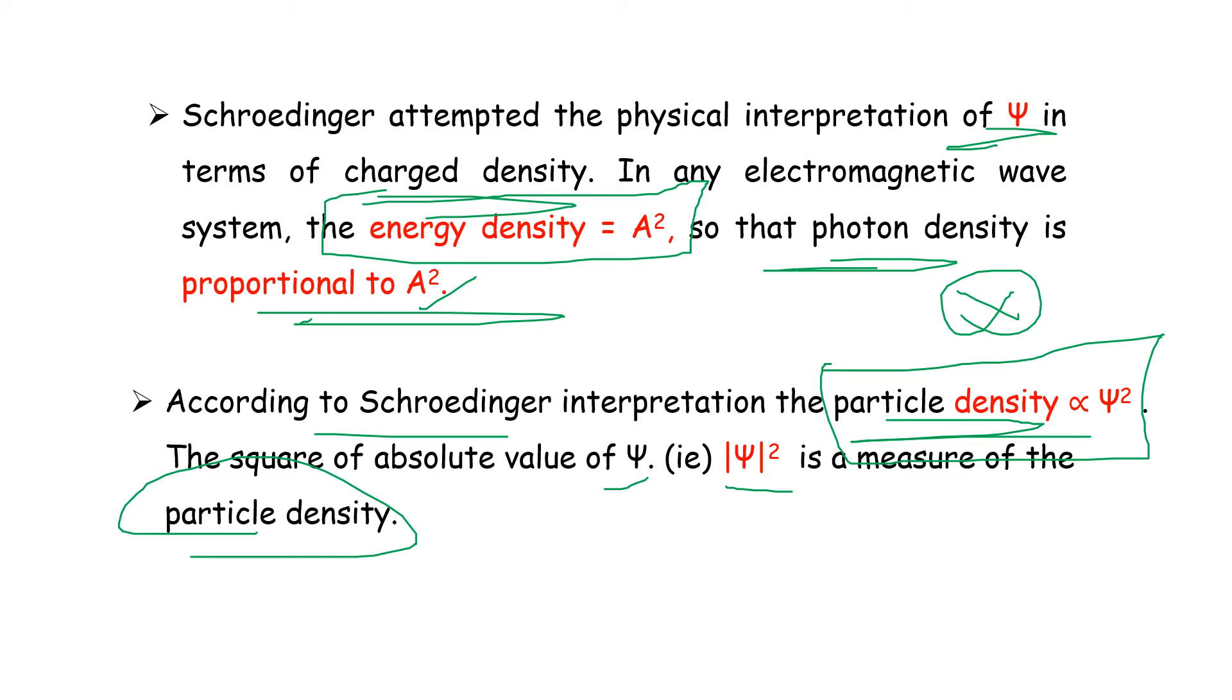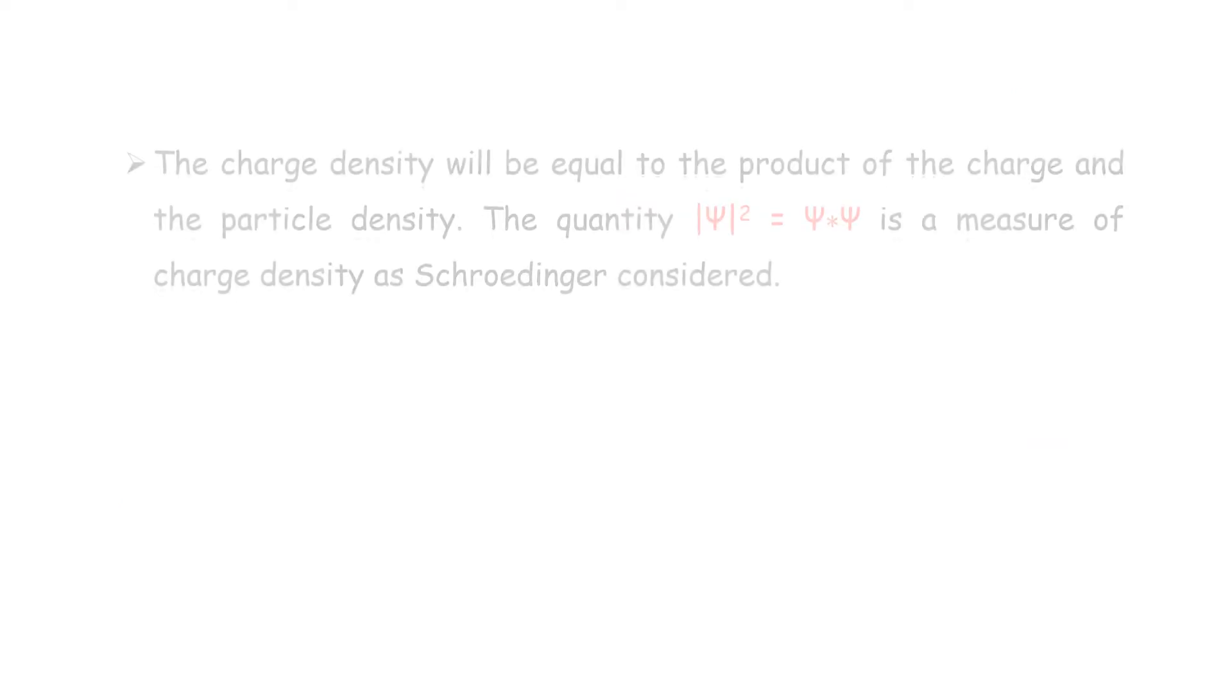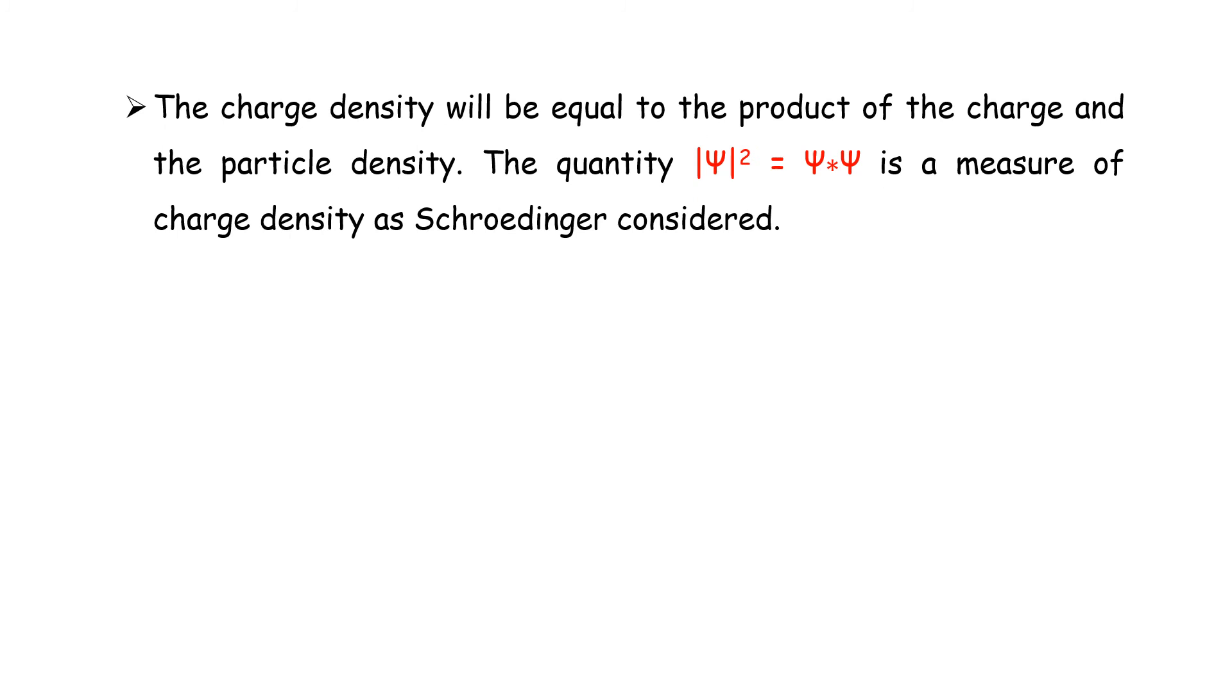ψ² is equal to ψ*ψ (psi star psi). The charge density will be equal to the product of the charge and the particle density.